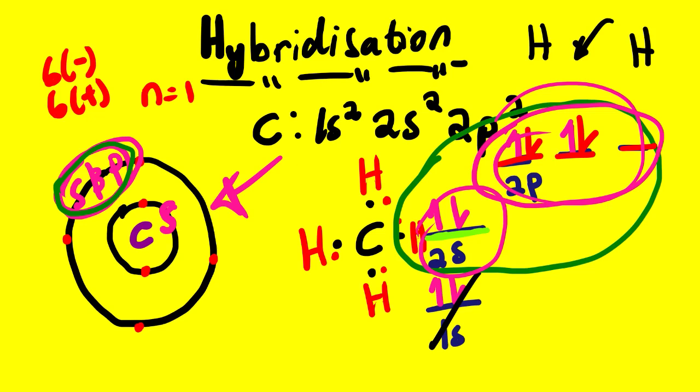So hybridization is basically when we try to make it possible for atoms to bond by mixing the orbitals, and we mostly focus on the outermost energy level orbitals. This is just an introduction to hybridization. The next lesson video will be Lesson 103.2, where we look at how to identify hybridization and how to label or name the type of hybridization that is taking place. That is it for this lesson video — this is Wahoula. Thank you very much.